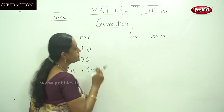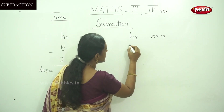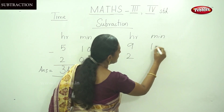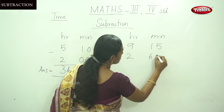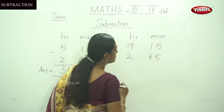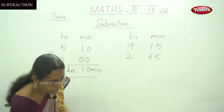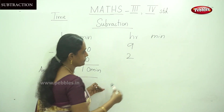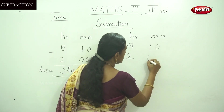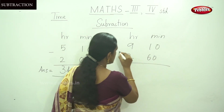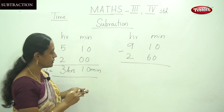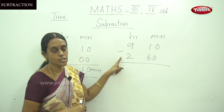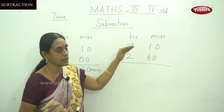That is 4 here. That is 9 and 2 here, 15 and 60. So minus that is 9 hours 10 minutes.